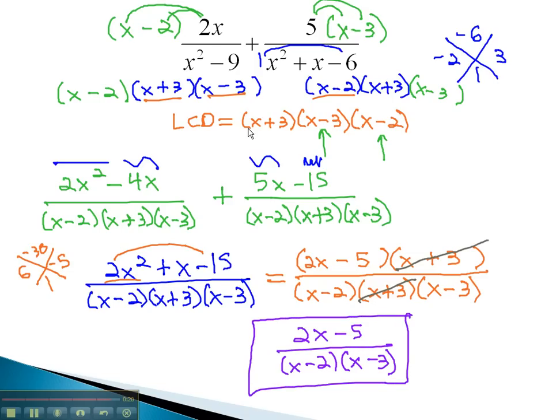To add with these rational expressions, we find the least common denominator by factoring and multiply by any missing factors. In part 2 of this video, we will look at a subtraction problem that we can do the exact same process to solve.